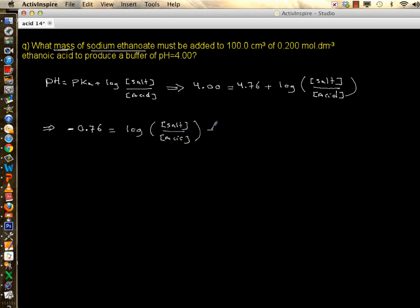We can do inverse log, so this side is 10 to negative 0.76. Inverse log becomes just a ratio, so the log goes away, so you have simply salt over acid.